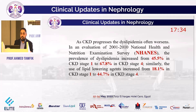As CKD progresses, the dyslipidemia often worsens. In an evaluation of the 2001 to 2010 National Health and Nutrition Examination Survey (NHANES), the prevalence of dyslipidemia increased from 45.5% in CKD stage 1 to 67.8% in CKD stage 4. Similarly, the use of lipid-lowering drugs increased from 18% in CKD stage 1 to 44.7% in CKD stage 4.